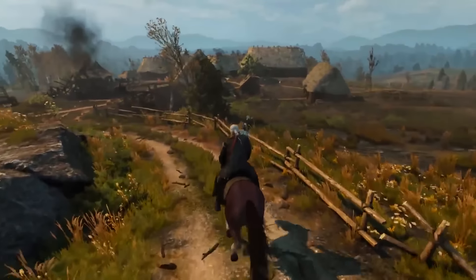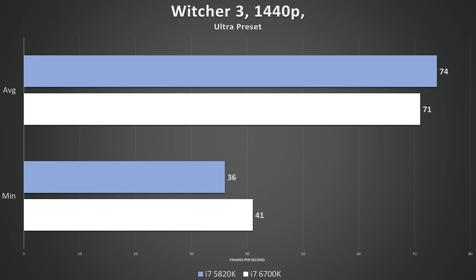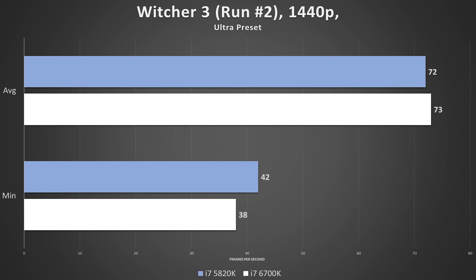Let's end with Witcher 3. It's a GPU-hungry game, and limiting ourselves to a single GTX 1070 definitely affects things here. The i7-6700K won the minimum category and the 5820K won the average category in the first run. I re-ran the benchmark and the results flipped — the 5820K wins the minimum category and the 6700K the average. If I kept running this benchmark, these scores would just continue to flip-flop. When you're GPU-bound, anything goes. The tiniest stalls can result in substantial frame-rendering delays, affecting frame rates in unpredictable ways.